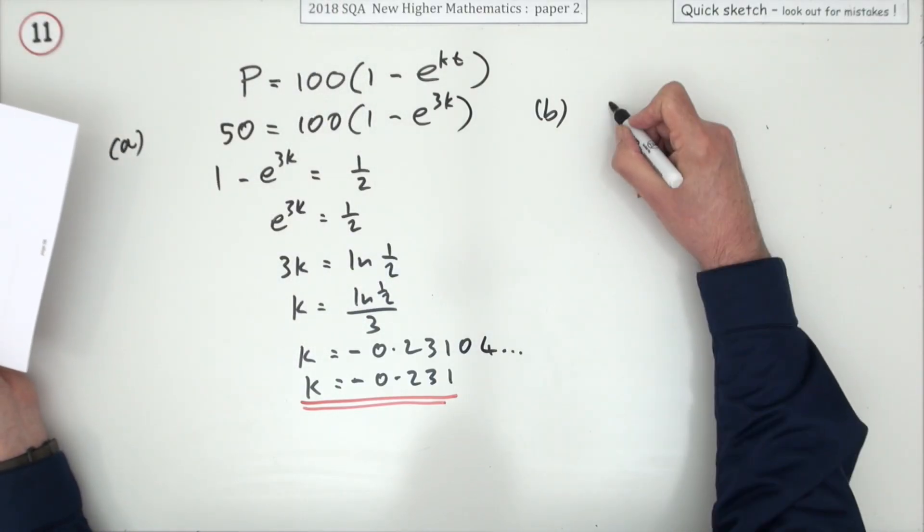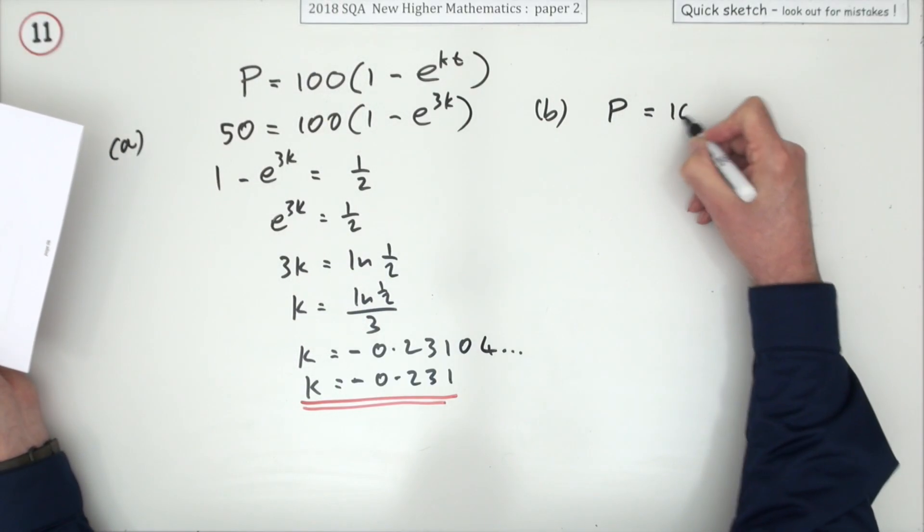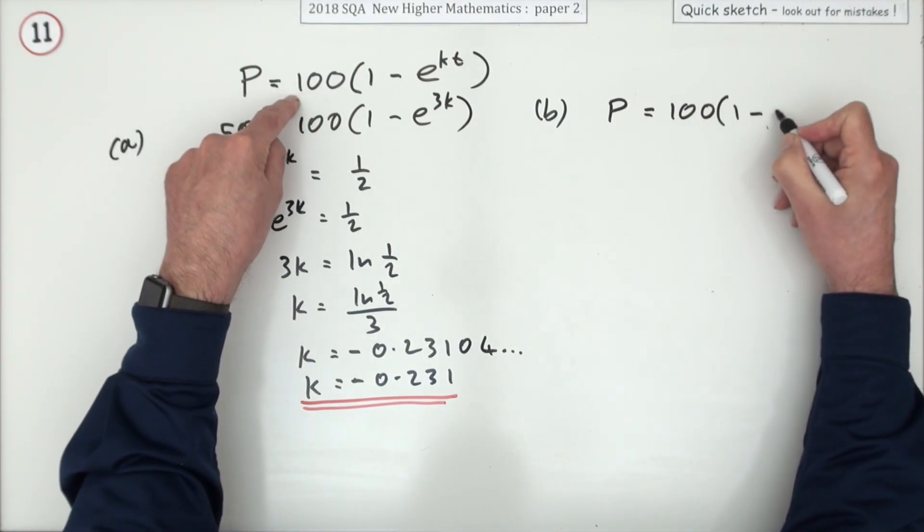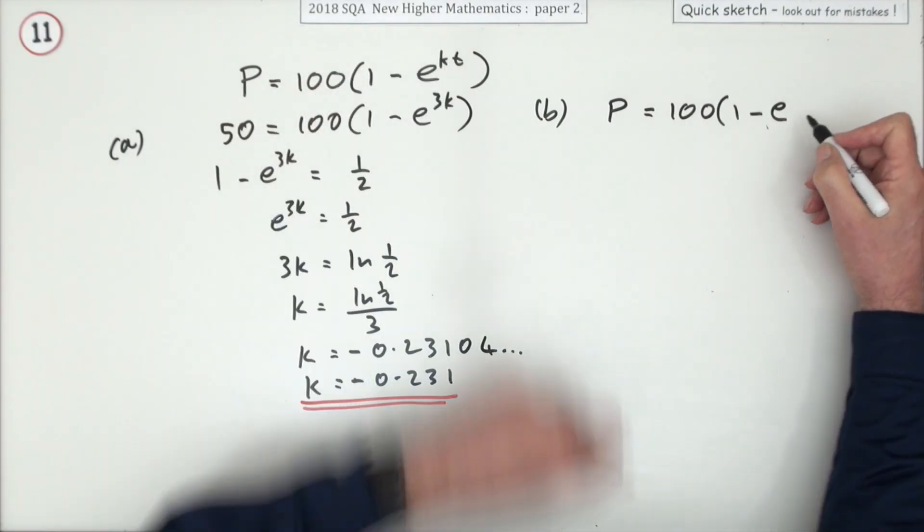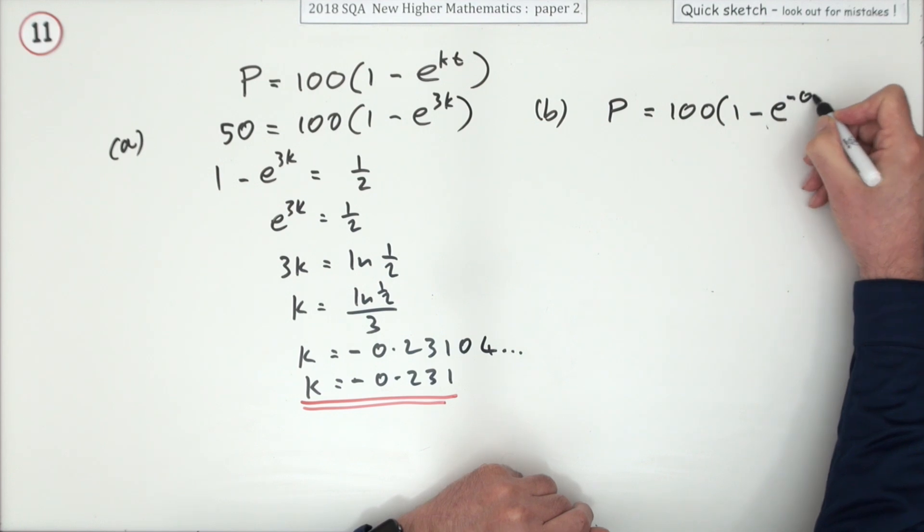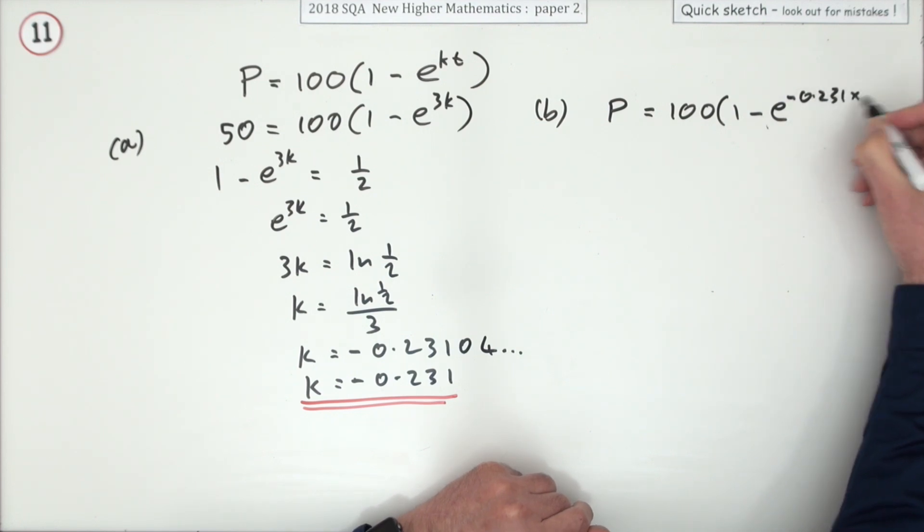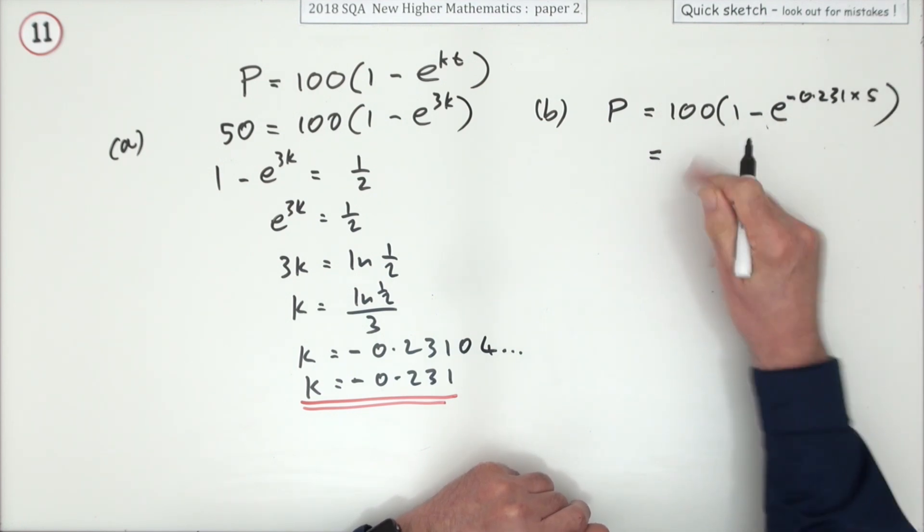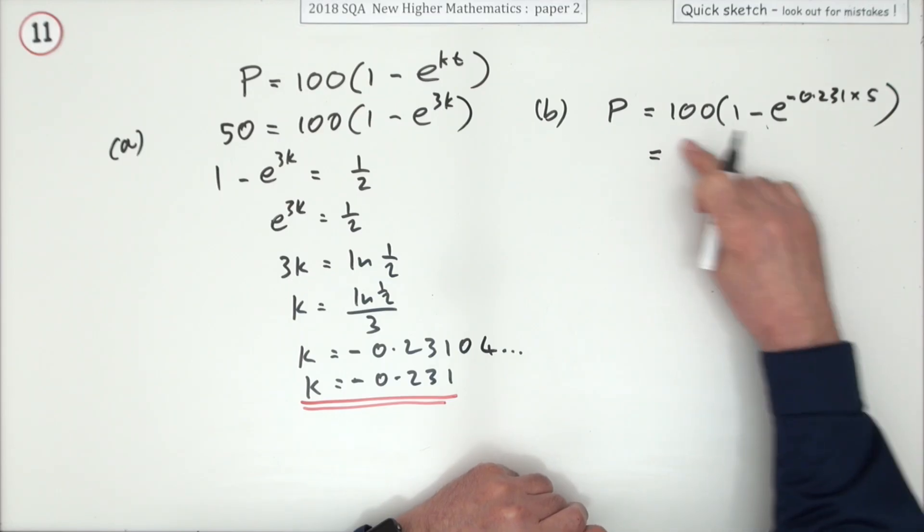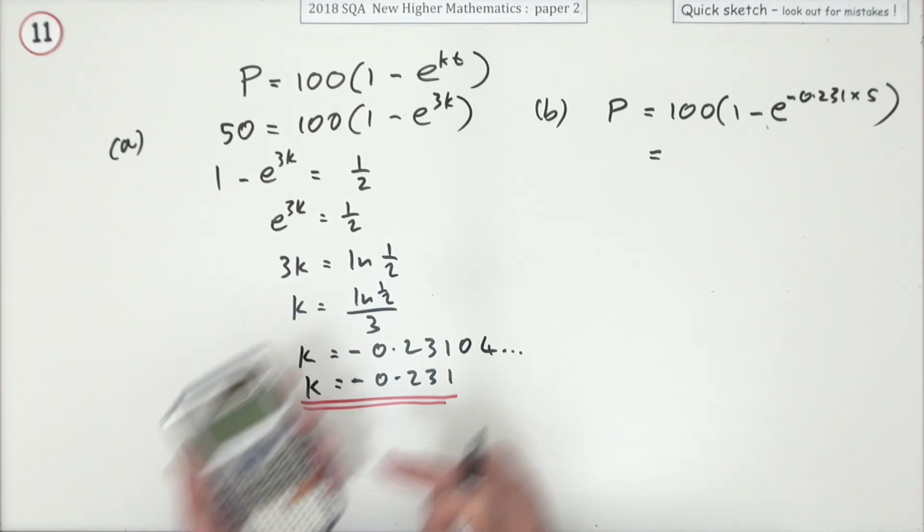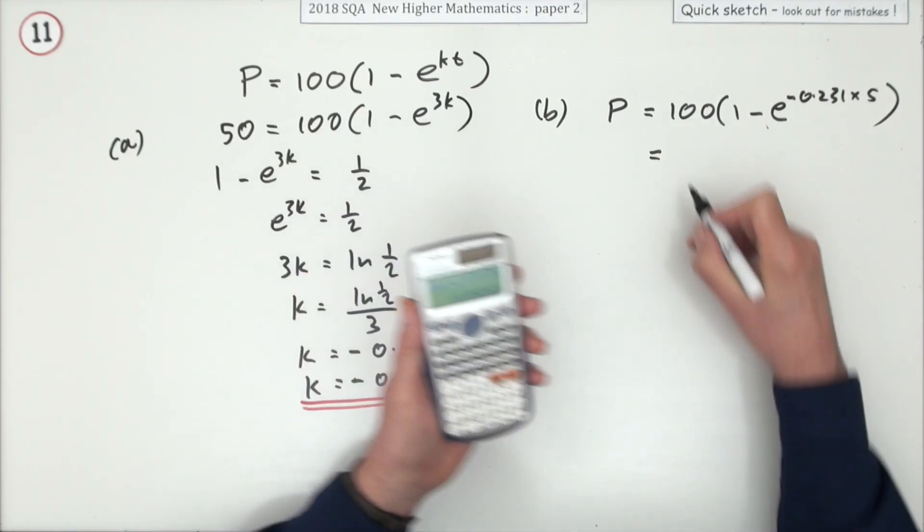I'm actually working out the percentage this time, so the formula is 100 times 1 minus e to the power, but this time I'm putting a 5 in, so it'll be negative 0.231 times 5. Now that's just a piece of arithmetic, so let's just press the buttons. You get 68.494 and so on.